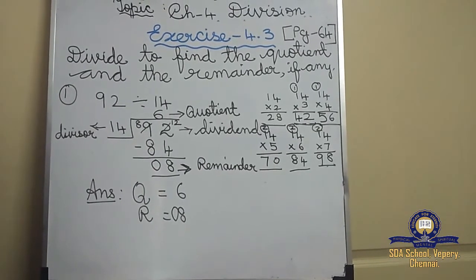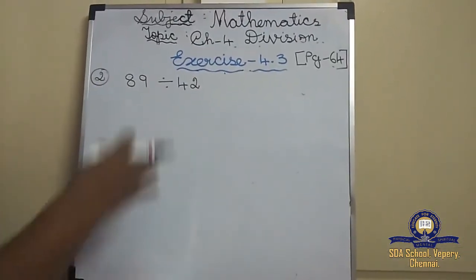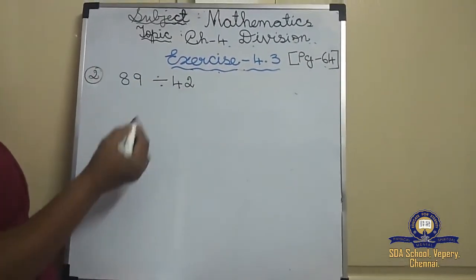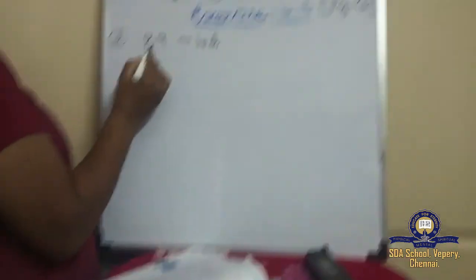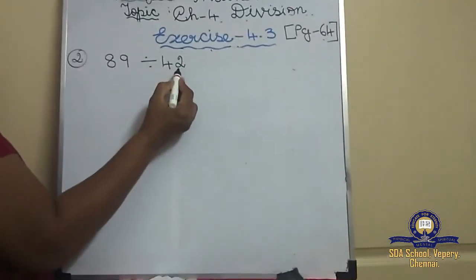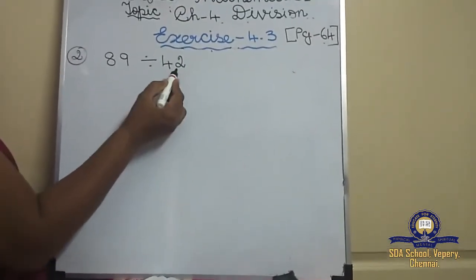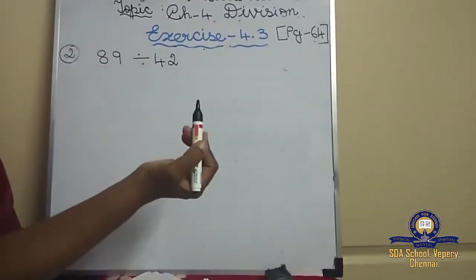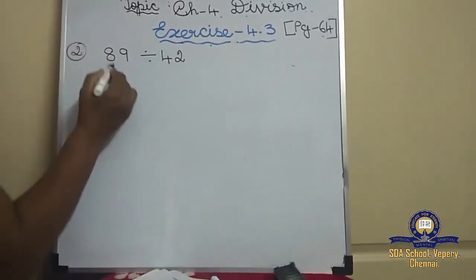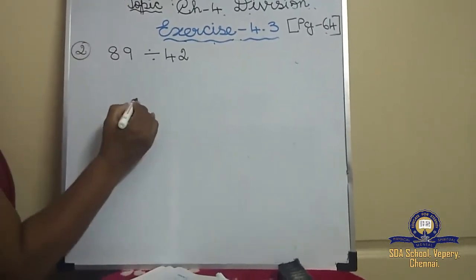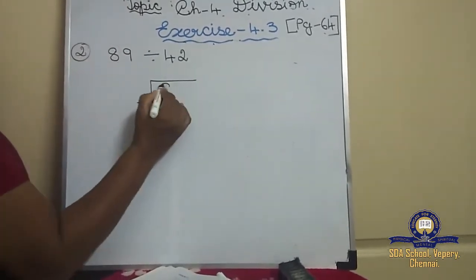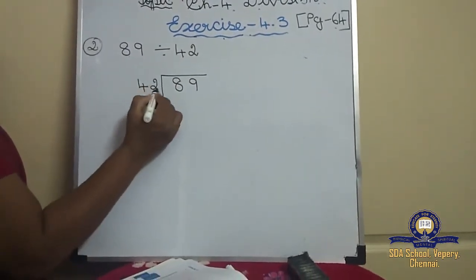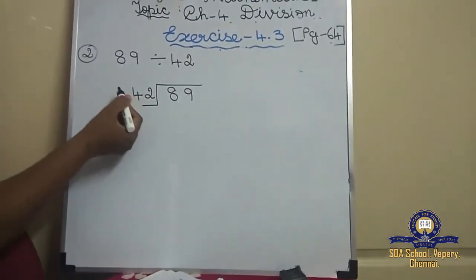We will do the second sum: 89 divided by 42. What's the dividend? 89 is the dividend and 42 is the divisor. You should not put the dividend outside or the divisor inside — you can't divide that way. Be careful.